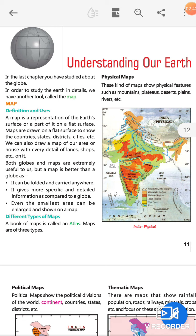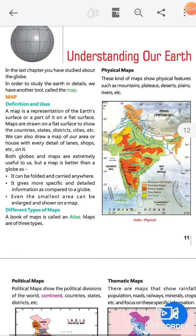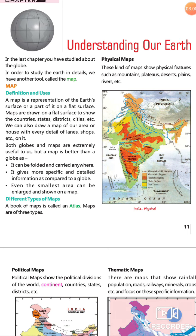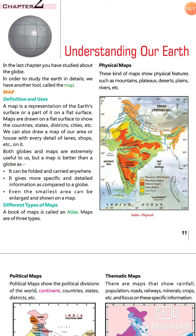The map can be better than the globe in many ways. The smallest area can be enlarged and shown on the map. There are different types of maps. A book of maps is called an atlas.